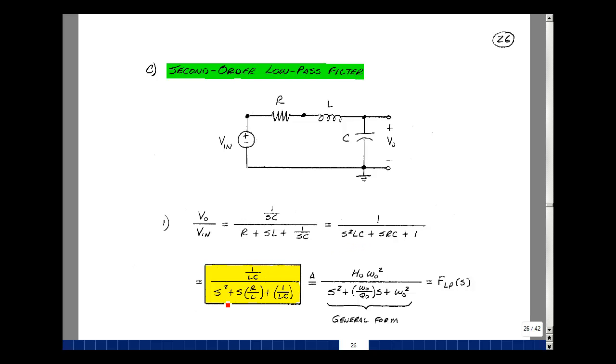Dividing through by LC, I just get 1 times S squared. And then I have RC divided by LC. The C's cancel, and I get R over L. And then I'm going to divide 1 by LC. So I get 1 over LC.